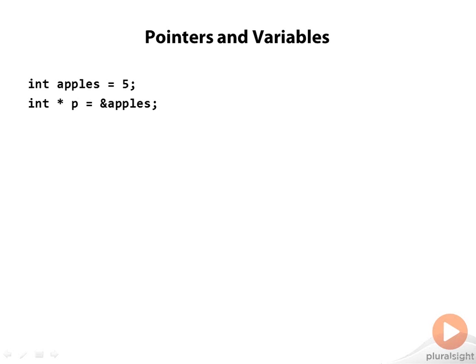That's the ampersand, which is a unary operator that I have not yet introduced, and has nothing to do with the bitwise and operator, which as you know is a binary operator. The address of operator returns the address of some object, in this case the object that the apples variable refers to.